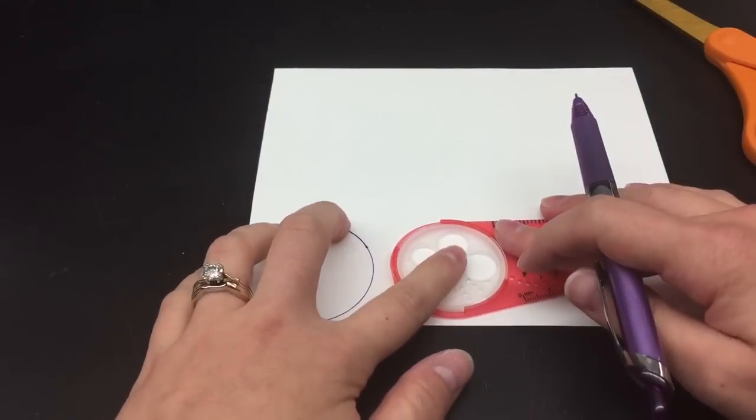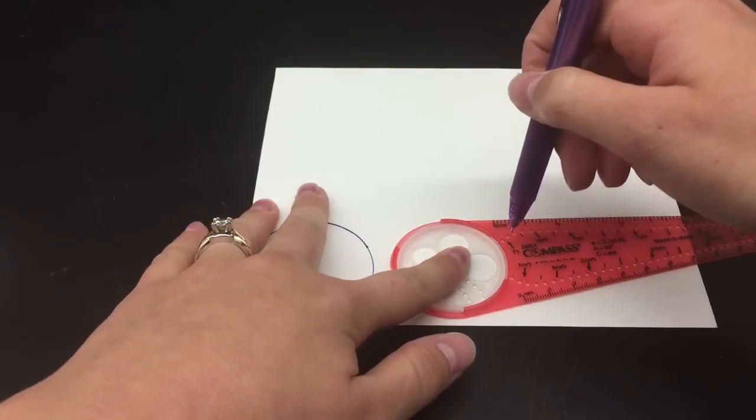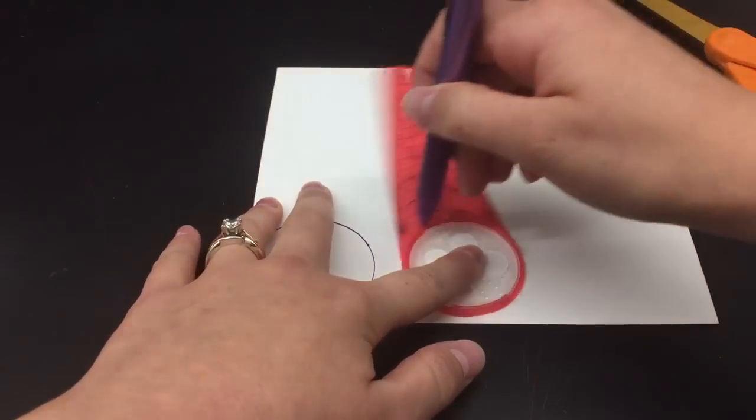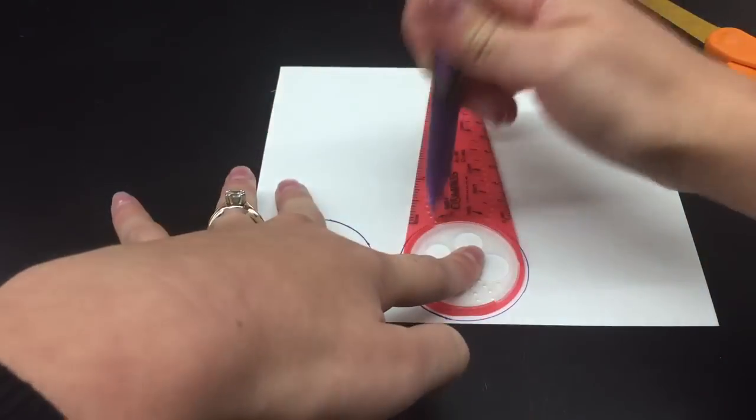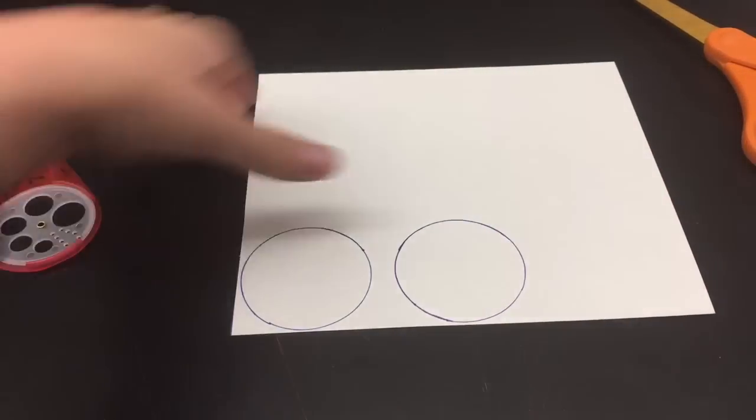Then we're going to move it over because we need one more circle. Making sure I have enough space here, I need to pick up my pen and do the other part. Then I have two circles that are the exact same size.